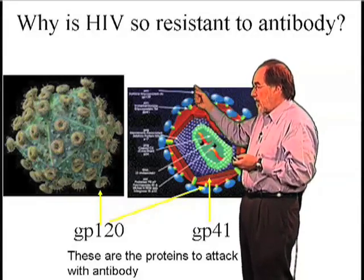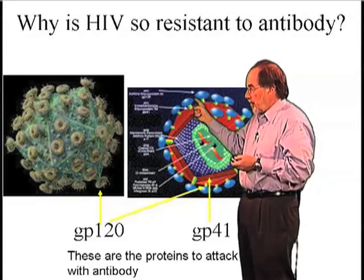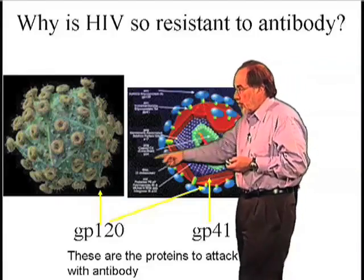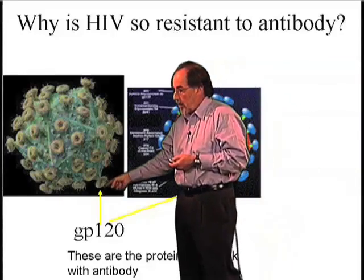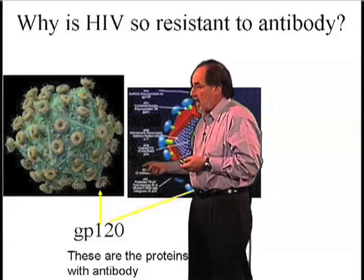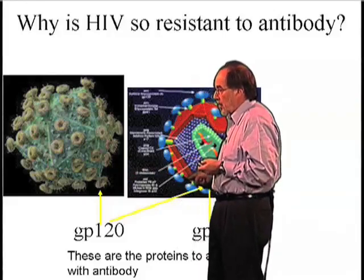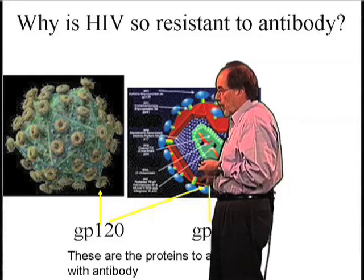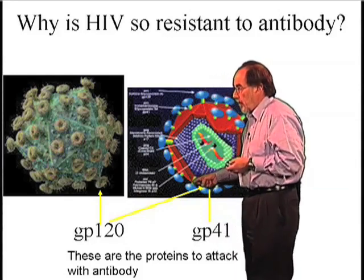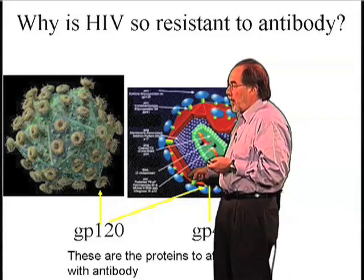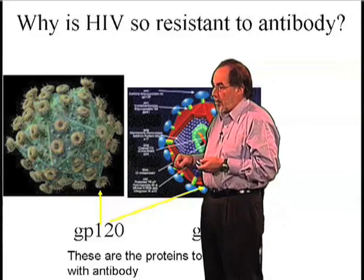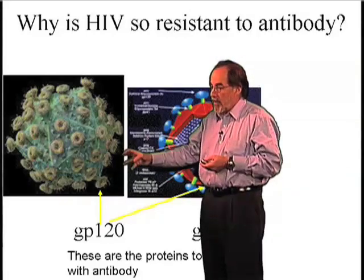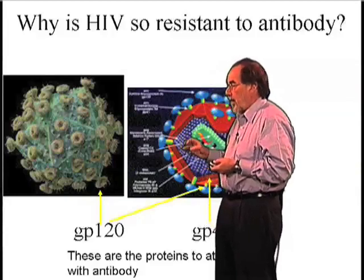The spike is made of two components. It's made of a head, which is called GP120 — you can see that down here very well. And it has a spike that goes into the membrane, which you can see over here very well, and that spike is known as GP41. So we have GP120 on the surface and GP41 on the spike.